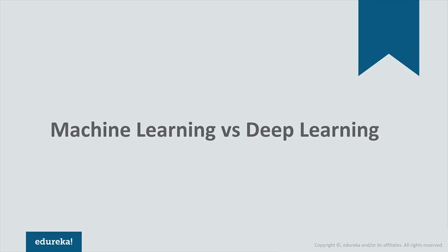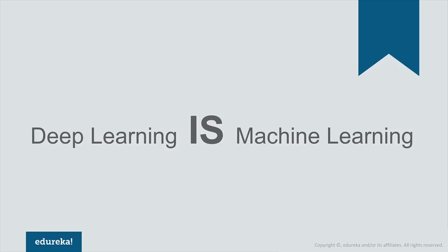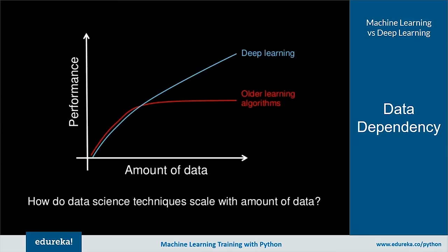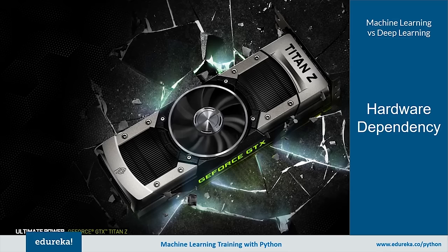The easiest way to understand the difference between machine learning and deep learning: deep learning is machine learning — more specifically, it's the next evolution of machine learning. Comparing them on data dependencies: when data size is small, deep learning doesn't perform well because it needs large amounts of data. Machine learning algorithms can work with smaller datasets. On hardware: deep learning requires high-end machines with GPUs, while machine learning can work on low-end machines.